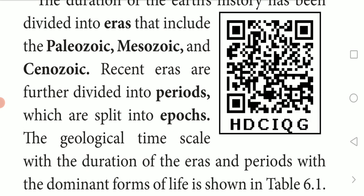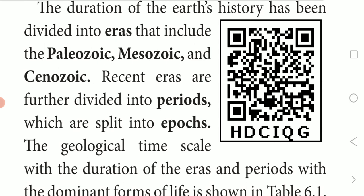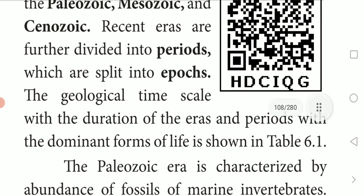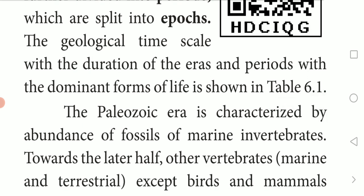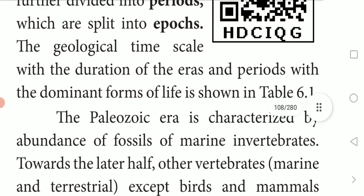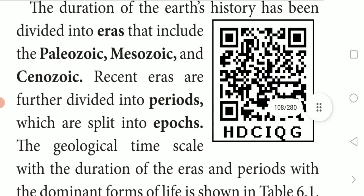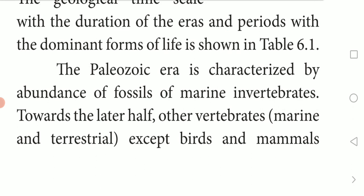These eras are further divided into periods, which are split into epochs. So there are three eras: Paleozoic, Mesozoic, and Cenozoic. These eras are further divided into periods, which are split into epochs. The geological time scale with the durations of the eras and periods, along with the dominant forms of life, is shown in the tabular column. We will now see what the Paleozoic era is characterized by.